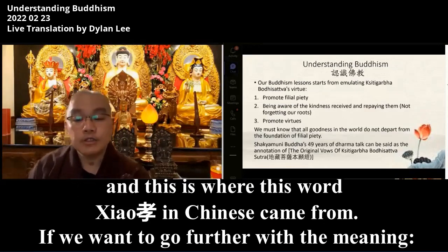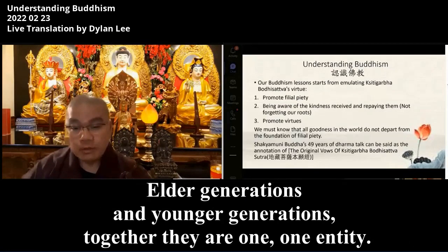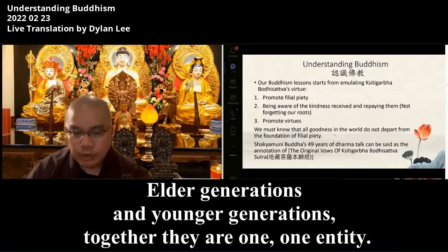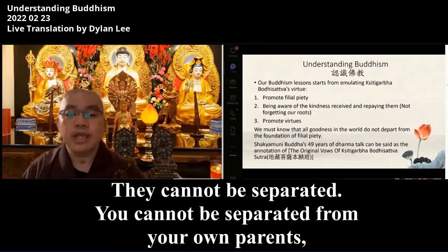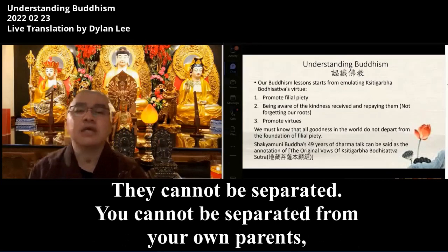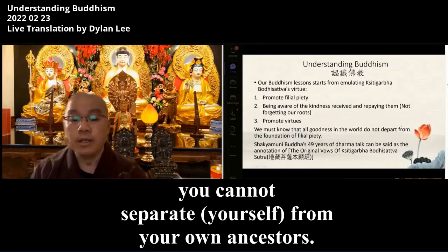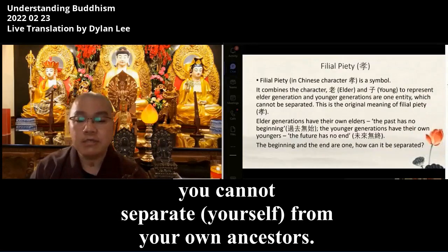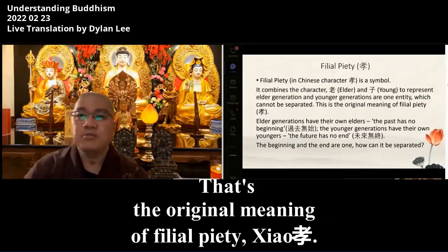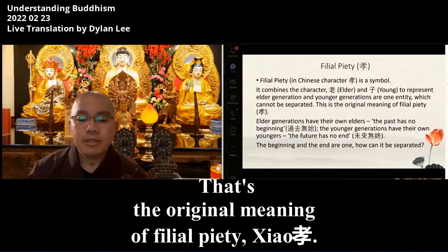If we want to go further with the meaning: past generations, elder generations, younger generations — they are one. One entity. They cannot be separated. You cannot be separated from your own parents. You cannot be separated from your own ancestors. That is the original meaning of Filial Piety — Xiao.